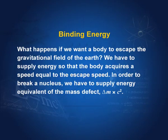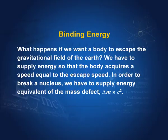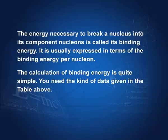What happens if we want a body to escape the gravitational field of the earth? We need to supply energy so that it acquires the escape velocity. Similarly, if we want to break a nucleus, we will have to supply energy equal to the binding energy — that is, delta m times c squared. The energy necessary to break the nucleus is called its binding energy, and it is usually expressed in terms of binding energy per nucleon.